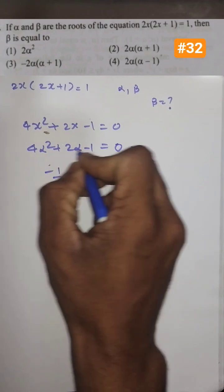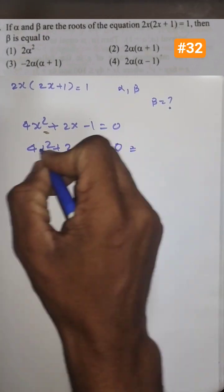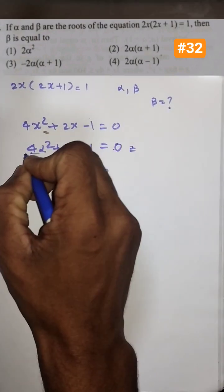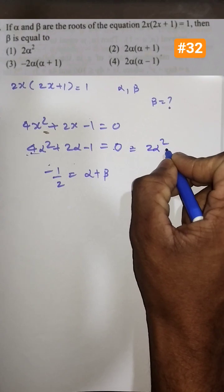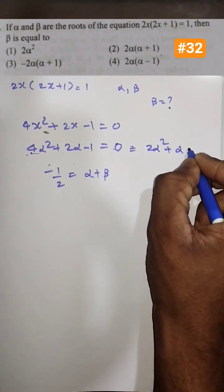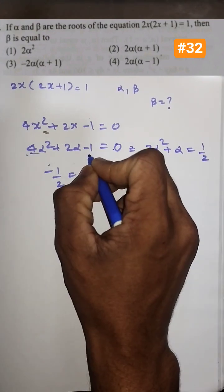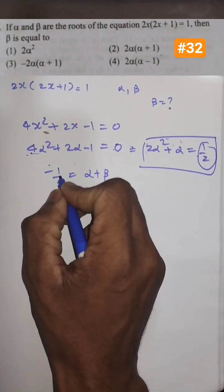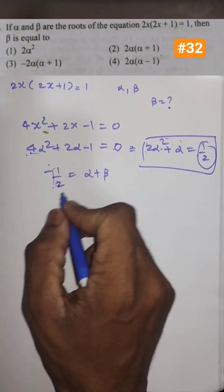So alpha plus beta is minus of 1 by 2. And we know from this equation that I can divide this entire expression with 2 and I'll be getting 2 alpha square plus alpha equal to 1 by 2. I put this minus 1 by 2 out, so I'll be getting 1 by 2. I can put 1 by 2 here in this expression.